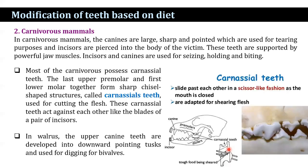In carnivorous mammals, the canines are large, sharp, and pointed, used for tearing. Incisors are pressed into the body of the victim. These teeth are supported by powerful jaw muscles. Incisors and canines are used for seizing, holding, and biting. Most carnivorous mammals possess carnassial teeth — the last upper premolar and the first lower molar together form a sharp chisel-shaped structure used for cutting flesh, acting against each other like the blades of a pair of scissors. In walrus, the upper canine teeth are developed into a downward-projecting structure used for digging for bivalves.